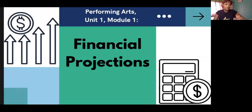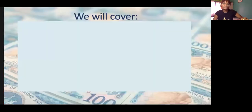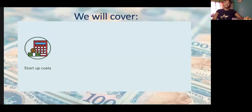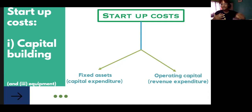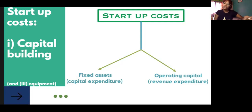Last week we started with financial projections and looked at startup costs only. We looked at capital building and identified the two types of startup costs, which would be fixed assets — big costs for things that last more than a year, things you're going to be using continuously — and we also looked at operating capital, which we're going to delve into more today.